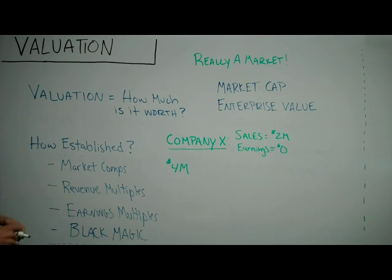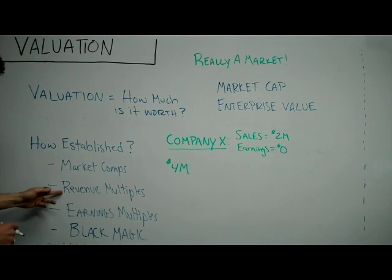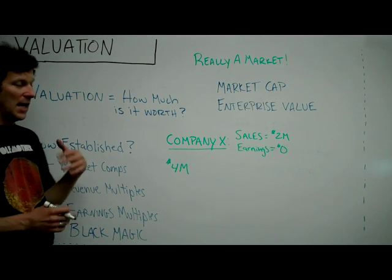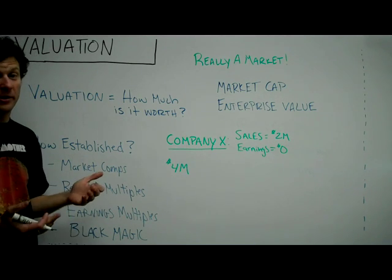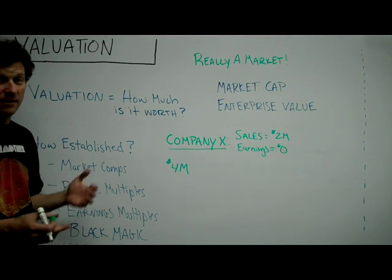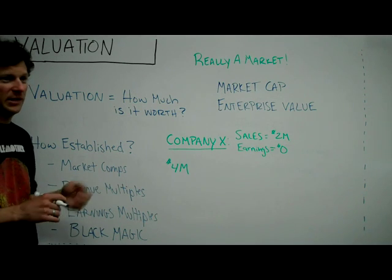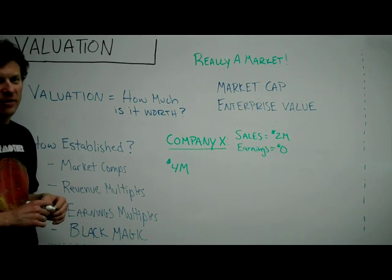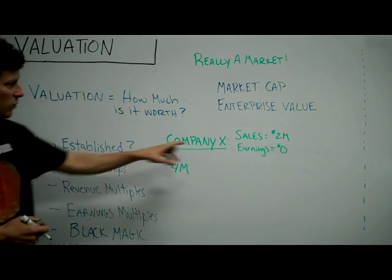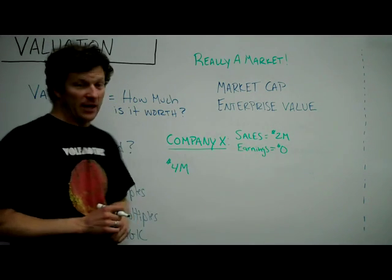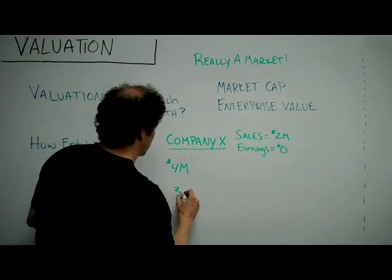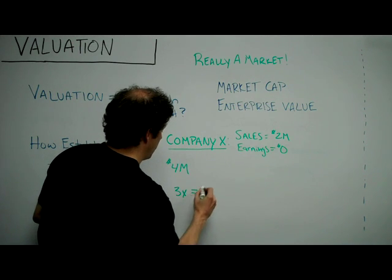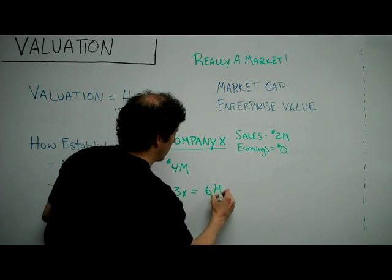The next method is revenue multiples. Revenue multiples are very simple — it's a way of saying I'm going to take how much revenue this company is doing and multiply it by some number, and that's what the company is worth. It may sound arbitrary and simple because it is; it's not a very complex way to value a company. In this case, we're doing $2 million a year in sales. With a 3x revenue multiple, that means this is going to be a $6 million valuation.